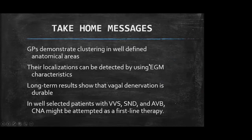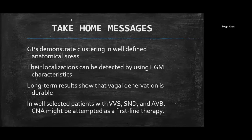In summary: GPs are concentrated in well-defined anatomical areas, and their localization can be detected using electrogram characteristics. Long-term results show that vagal denervation is durable. In well-selected patients with vasovagal syncope, sinus node dysfunction, and AV block, cardioneural ablation may be attempted as a first-line therapy.